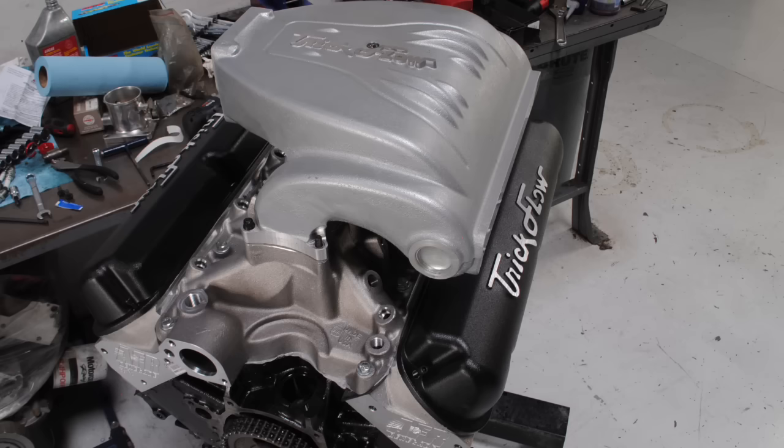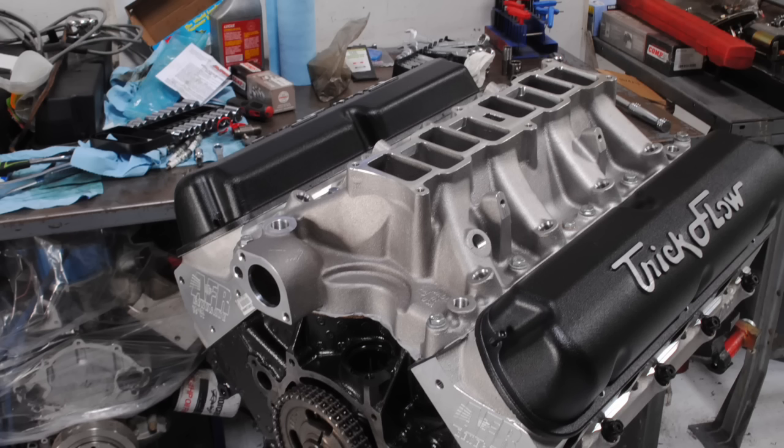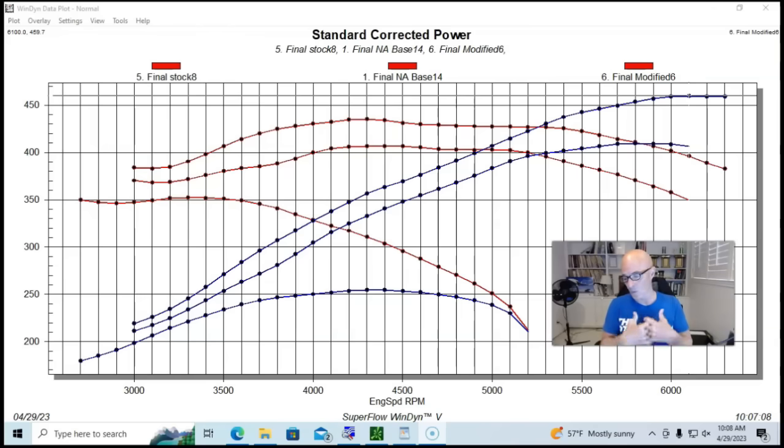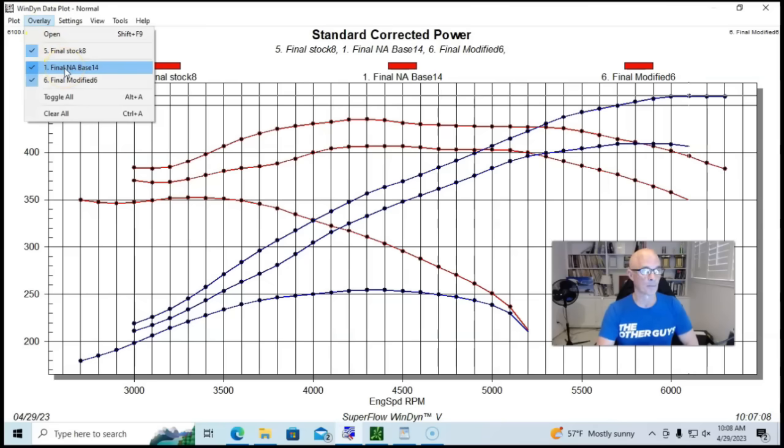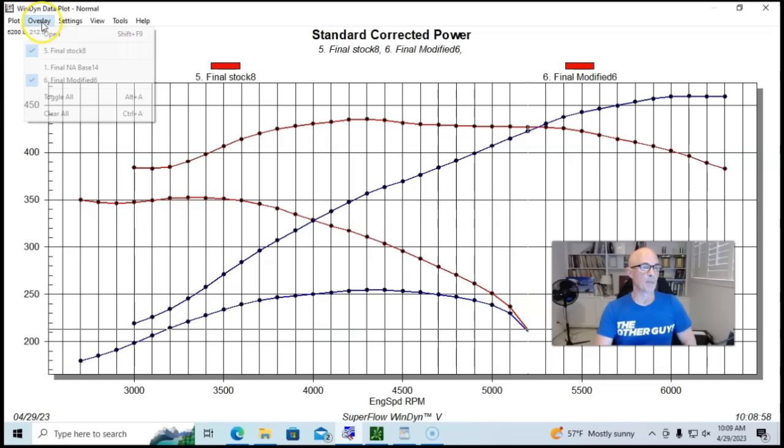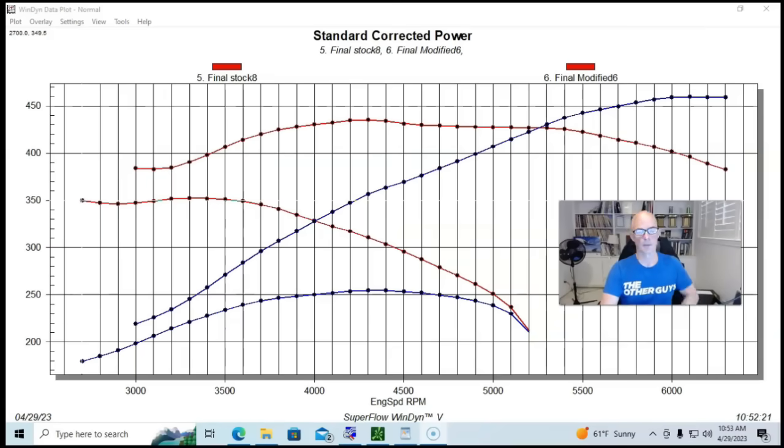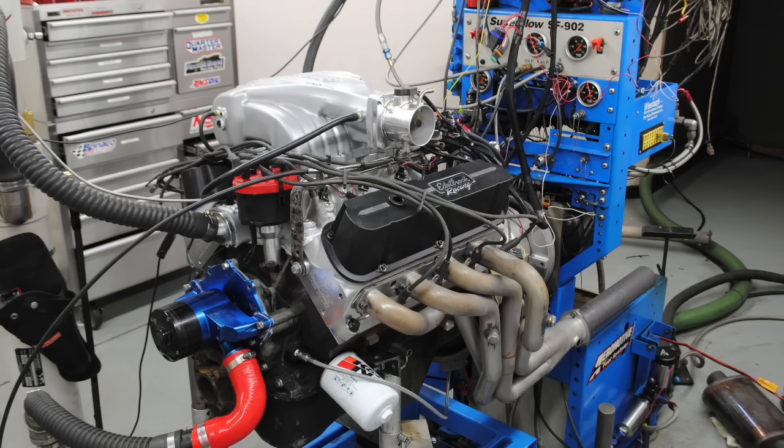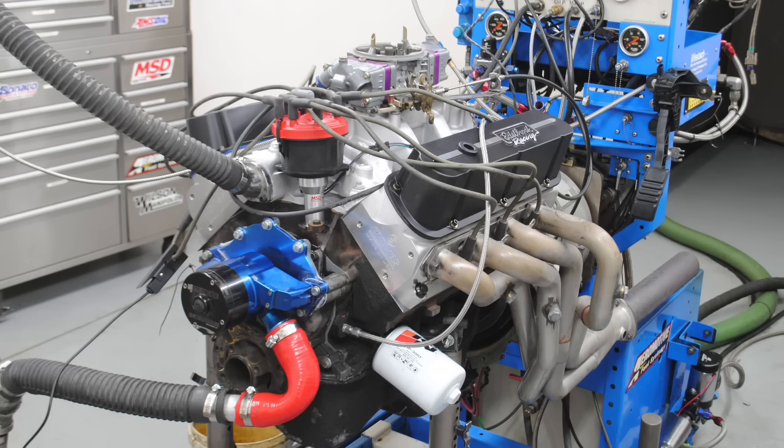But in addition to the camshaft, the other thing we need to think about is the induction system. The trick flow R intake manifold has never been a favorite of mine. Every time I've ever tested it, it has not performed the way that I thought it should, with lots of high RPM power and stuff. And it just didn't do that. I'm going to show you. So I think the induction system is definitely part of the problem here or part of the difference. And I'll show you what I mean. I'm going to go ahead and get rid of our big bang motor. And I ended up running the Edelbrock combination, both carbureted and EFI. And I'll show you what I'm talking about.